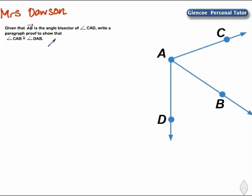Given that ray AB is the angle bisector of angle CAD, write a paragraph proof to show that angle CAB is congruent to angle DAB.